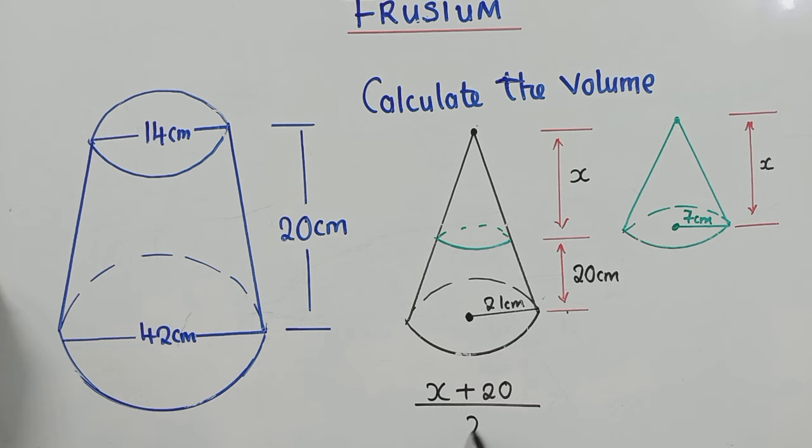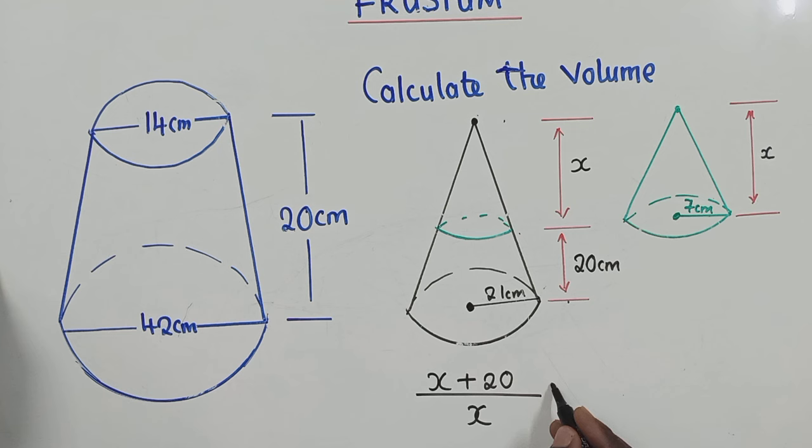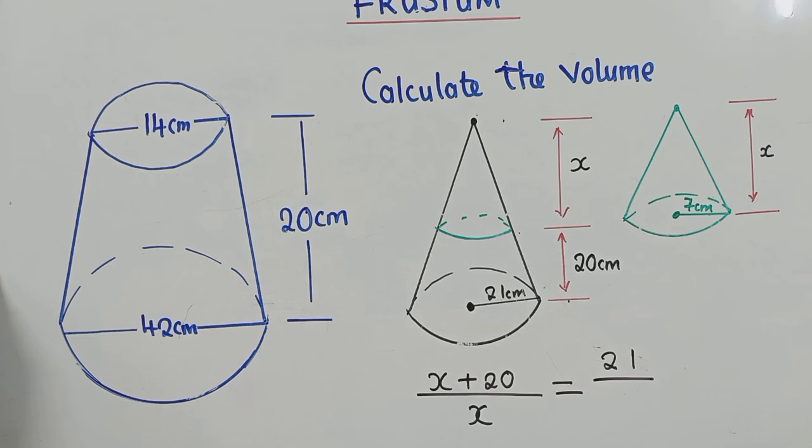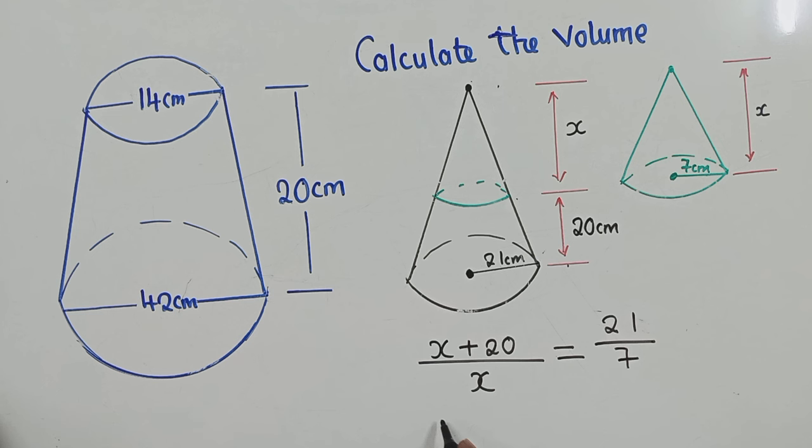From here to here, it's x. So x is equal to, now we go to the radius. So the radius of the bigger cone is 21 over the radius of the smaller cone, which is 7. So now you can solve, you cross multiply, you have 21x which is equal to 7 multiplied by x plus 20.